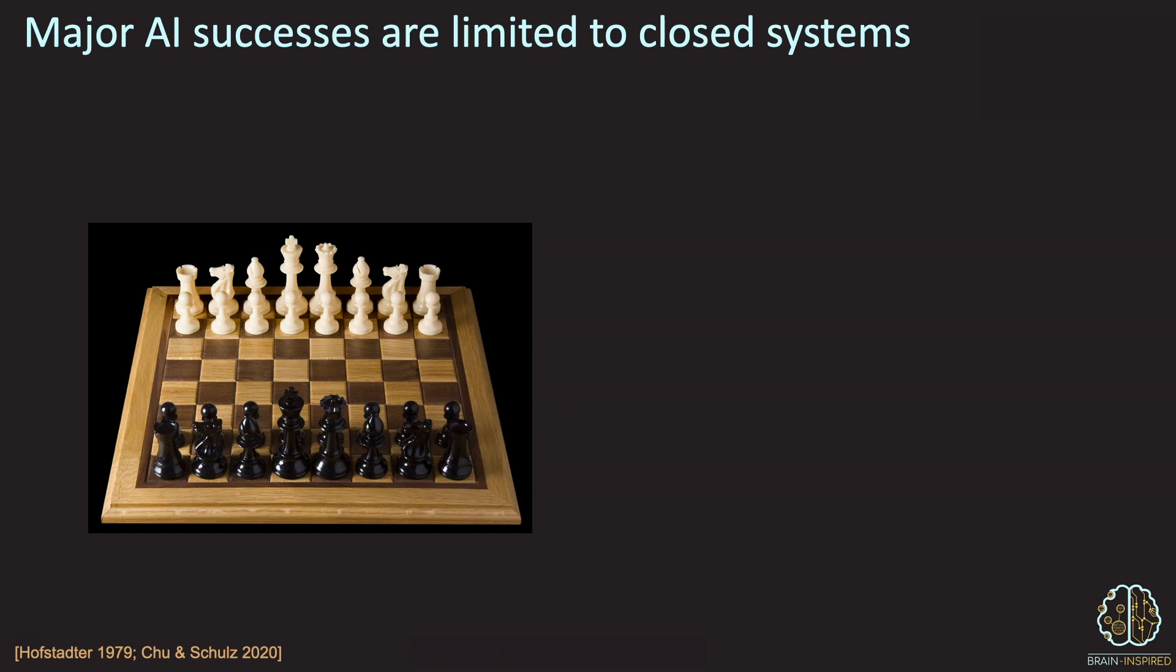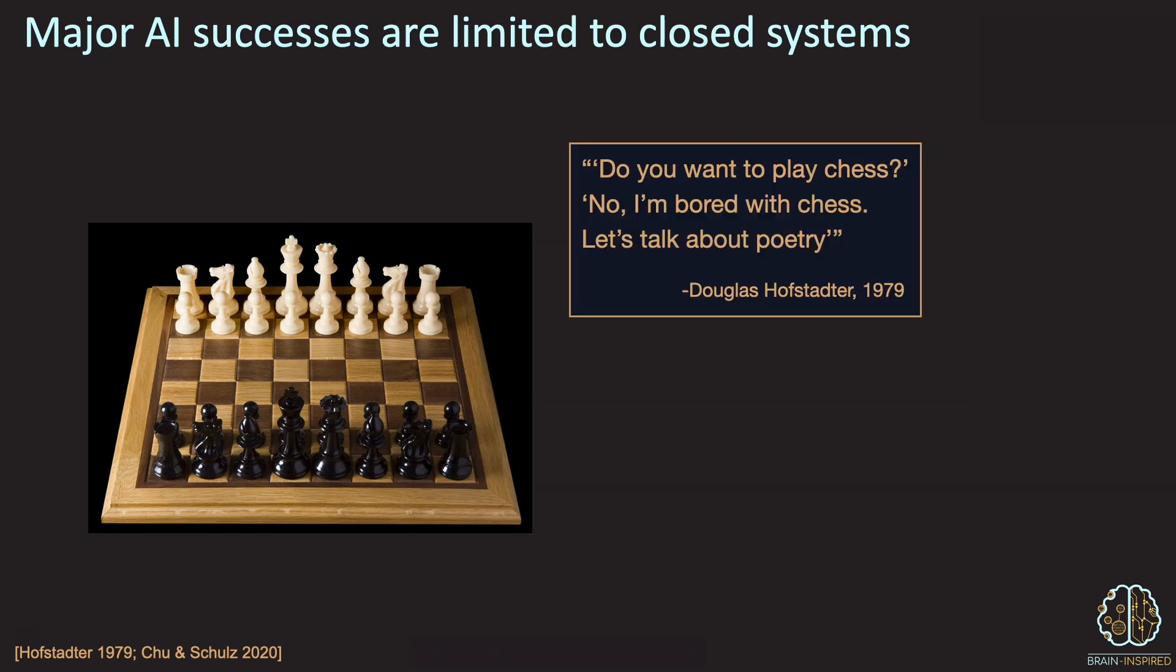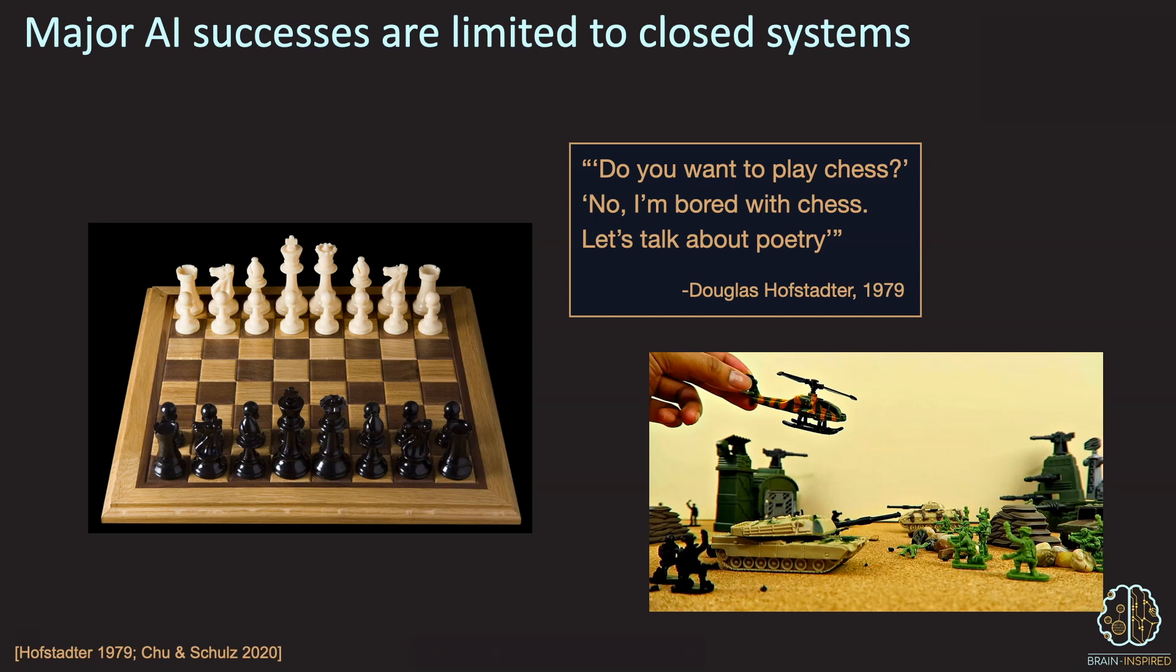Douglas Hofstadter, writing in 1979 about what true AI might look like, imagines asking an AI, do you want to play chess? And the AI might say, no, I'm bored with chess. Let's talk about poetry. And actually, I recently taught my kids how to play chess, and they actually enjoyed it for a while. But soon, my son decided he was bored with it. He took the chess pieces and pretended they were at war, of course, ignoring the board and the way that the pieces move. And that's one example of open-endedness. In fact, Laura Schultz, who studies child development, has a theory that kids making up games is an evolutionary adaptation to create problems for themselves that may come in handy later in life in an open-ended world.